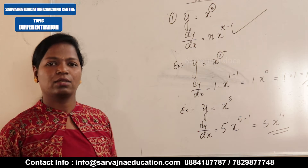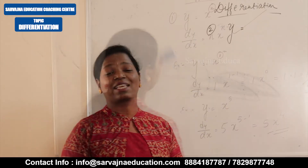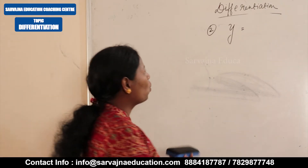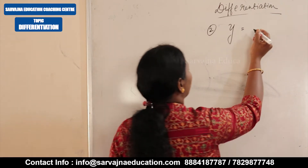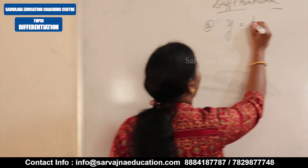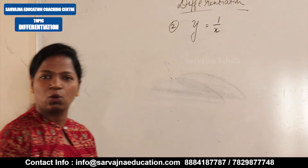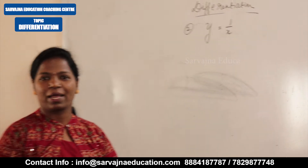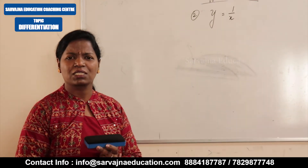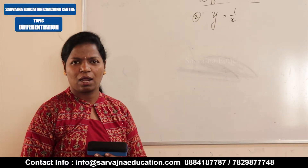Now we'll go to the second formula. y is equal to 1 by x. If you see 1/x, immediately the answer is minus 1 by x squared. Let me explain how we get that.